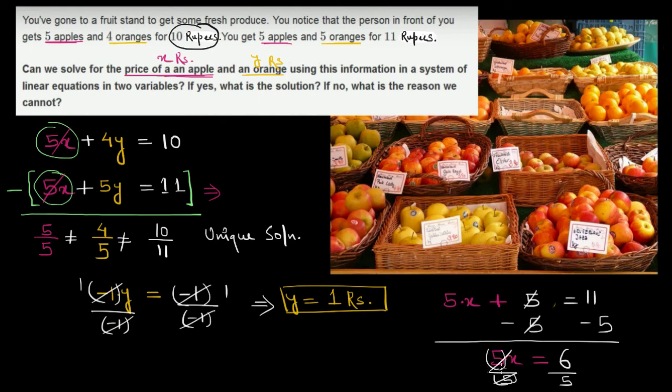To convert this to decimal, multiply numerator and denominator by 2, giving 12/10, which equals 1.2 rupees.